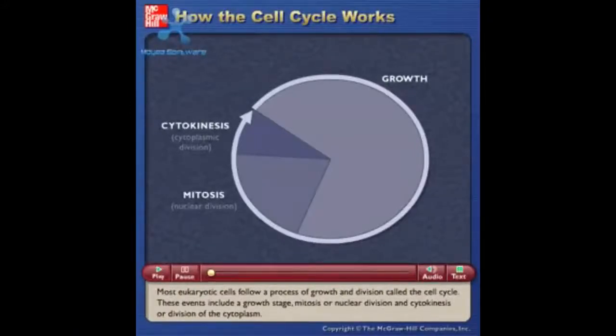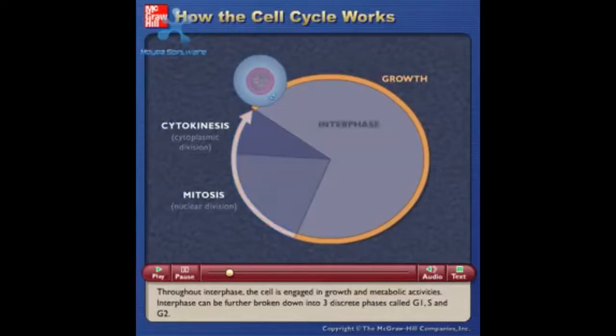Most eukaryotic cells follow a process of growth and division called the cell cycle. These events include a growth stage, mitosis or nuclear division, and cytokinesis or division of the cytoplasm. Throughout interphase, the cell is engaged in growth and metabolic activities.